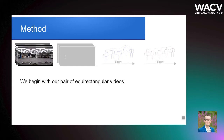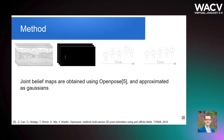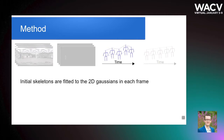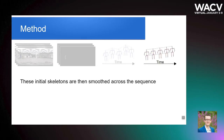Our method begins with a pair of equirectangular videos from our vertical pair. We obtain 2D joint belief maps using OpenPose, which we approximate as Gaussians. We then perform a two-stage estimation, starting with a principal component analysis-based estimate, and refined using an iterative smoothing method.